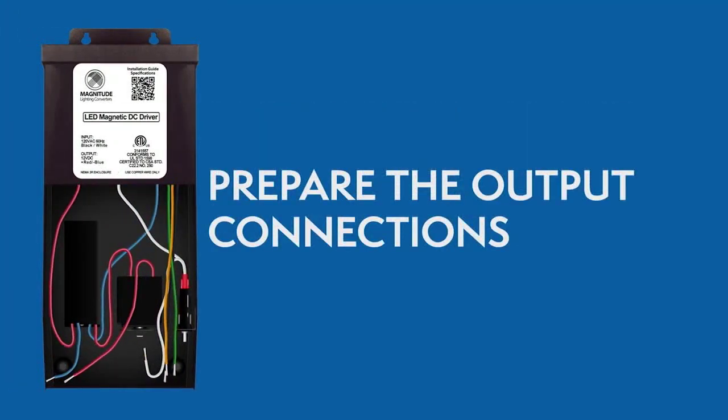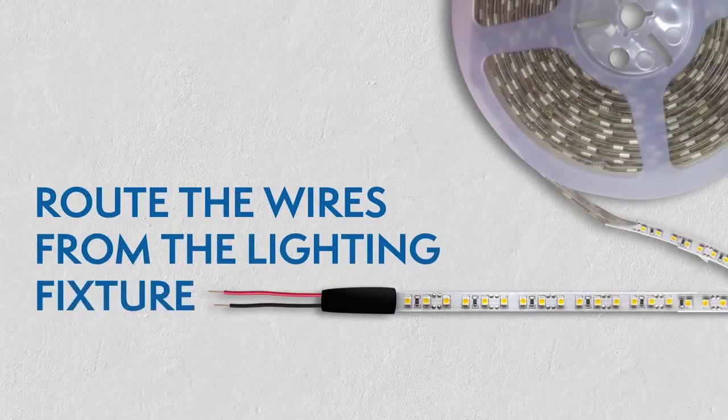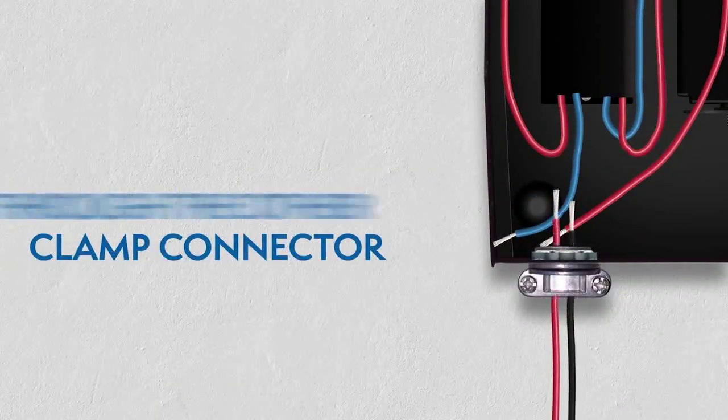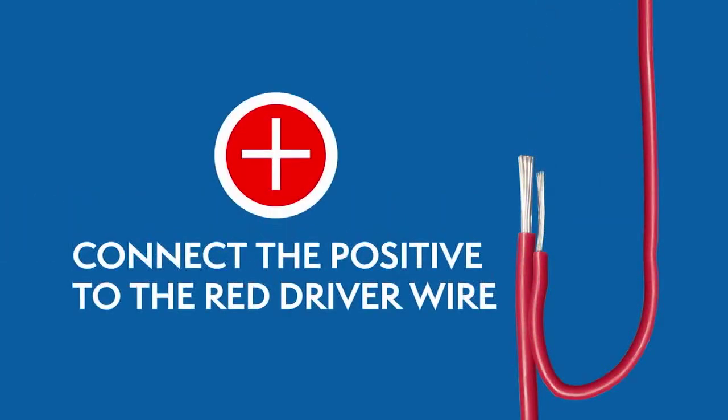Preparing the output connections. Route the wires from the lighting fixture through the other clamp connector. Then connect the wires using wire nuts.